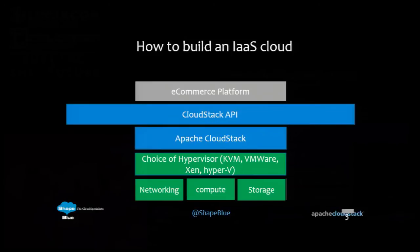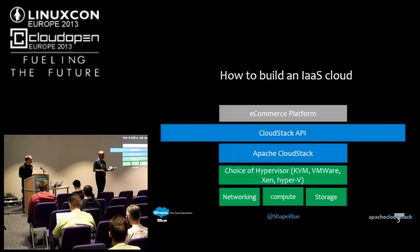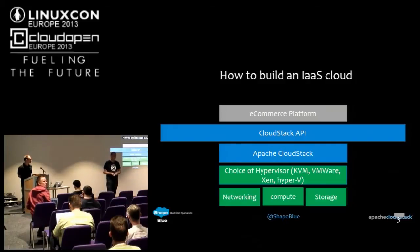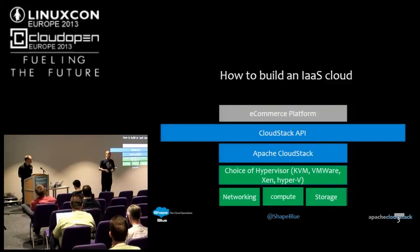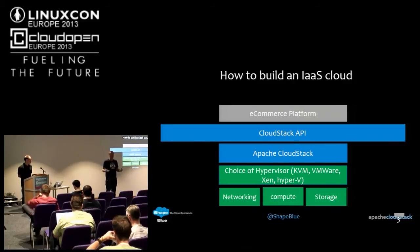CloudStack exposes a RESTful API. One of the key things is that our API looks very similar — if not identical — to the AWS EC2 API and the S3 API. That means if you've got tooling on top, whether developer tooling or a platform-as-a-service layer, a CloudStack cloud looks like Amazon Web Services to the rest of the world.